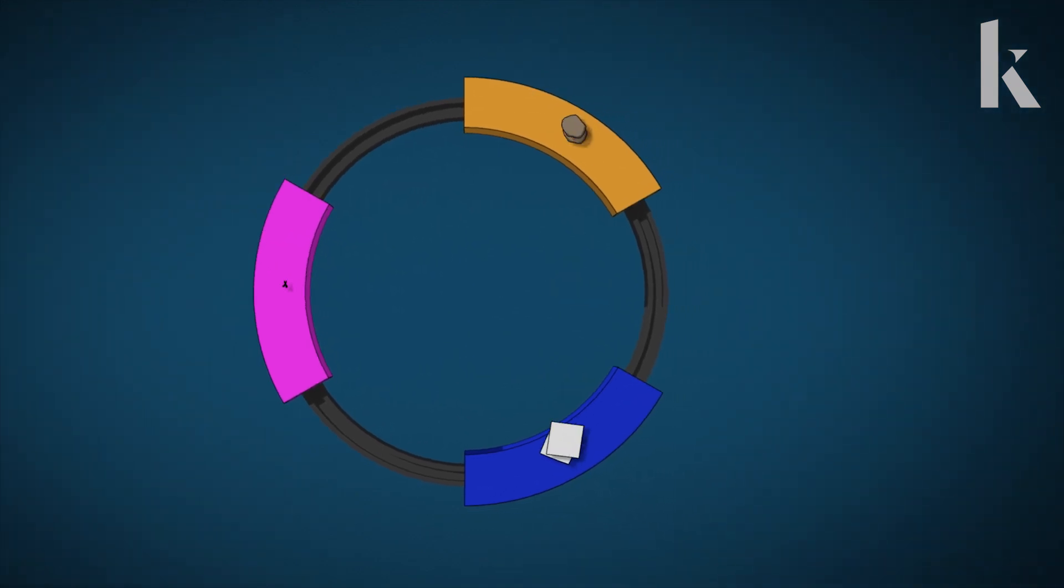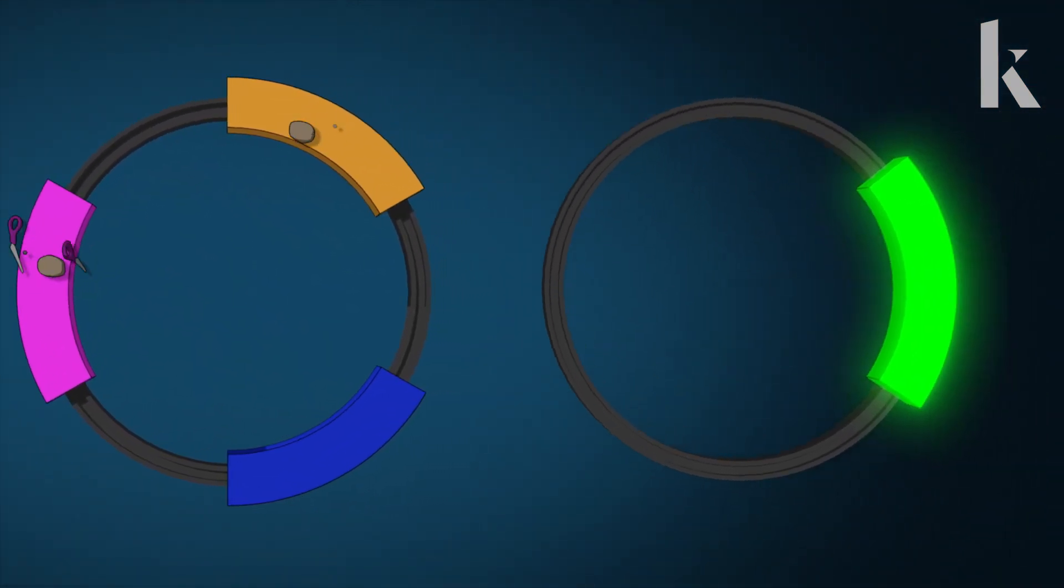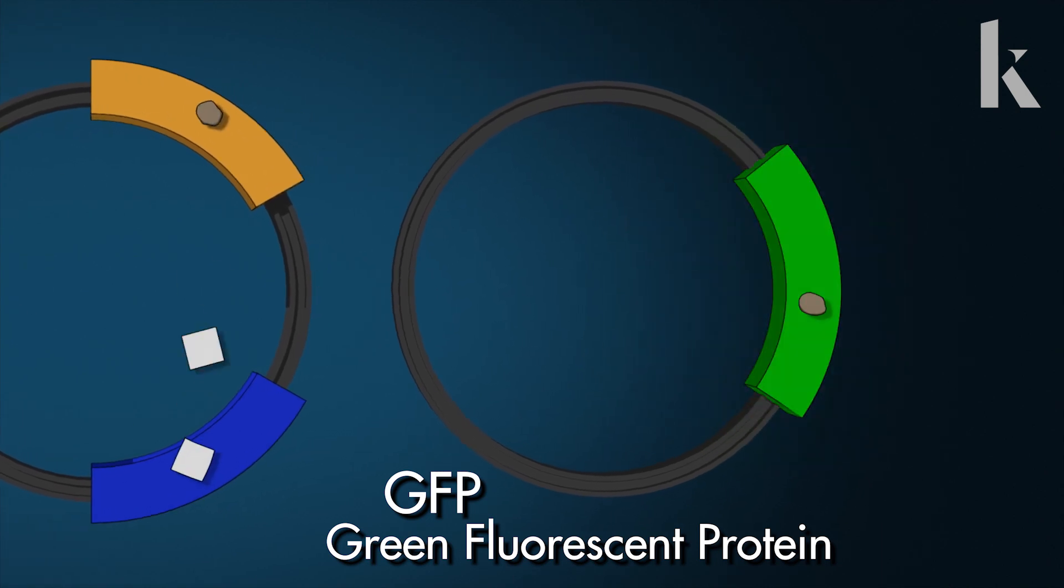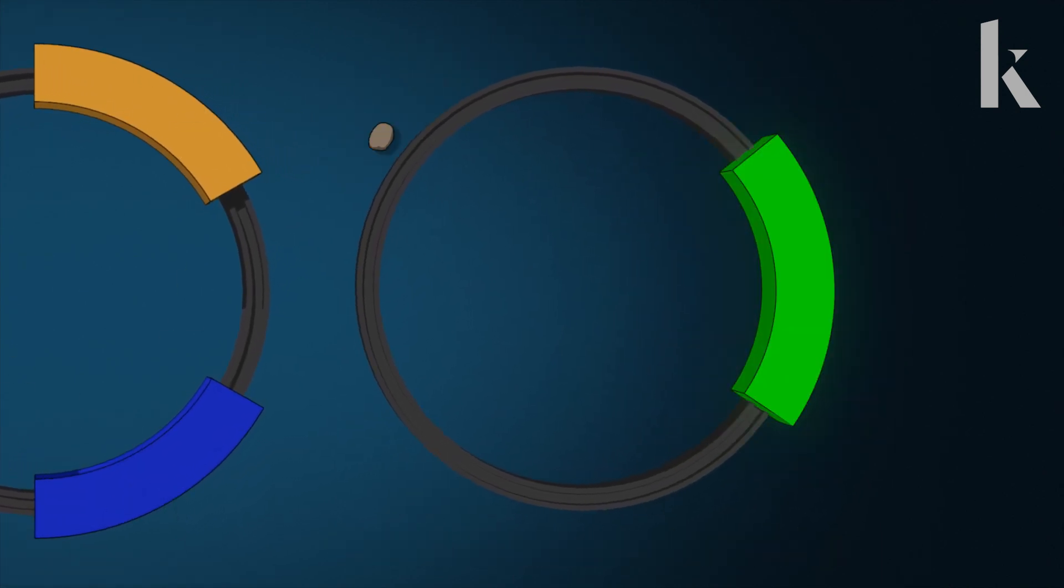How did the scientists know that their little oscillator was working? They introduced another gene into the bacterium that, when active, makes a protein that glows green.